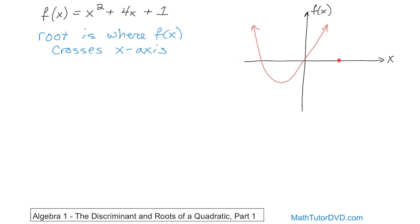If you want to think about this as being the ground — like the soil or something — and this is like a plant growing out of it, this would be where the roots are, right here where it crosses and goes into the ground. If that helps you remember it, great. So these crossing points are each called a root.